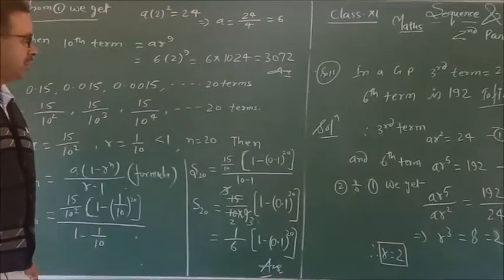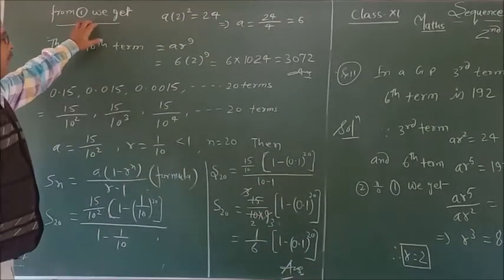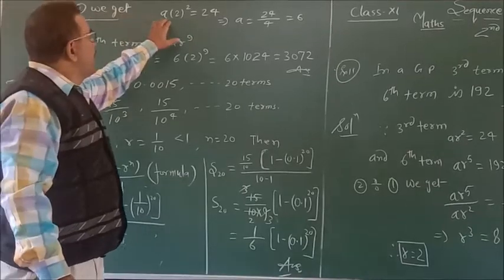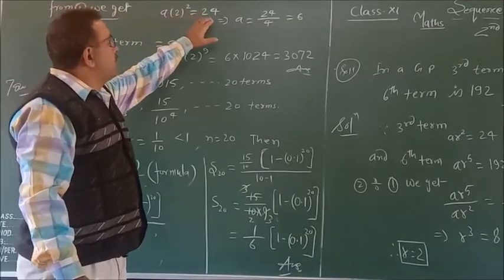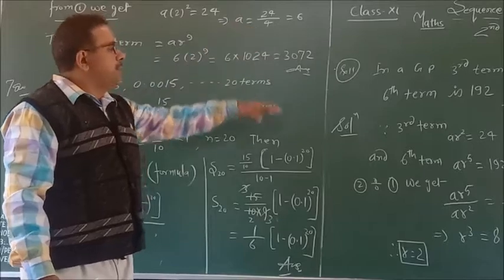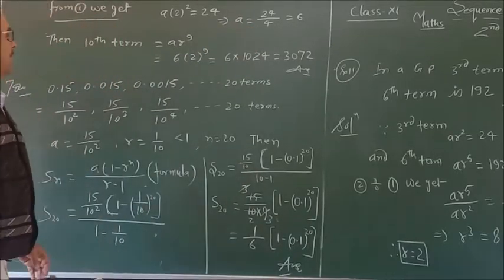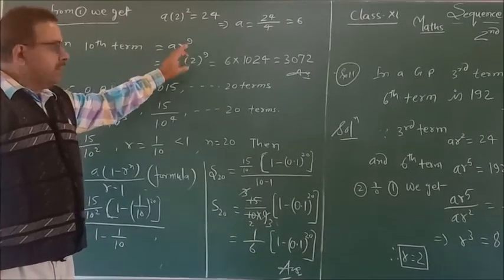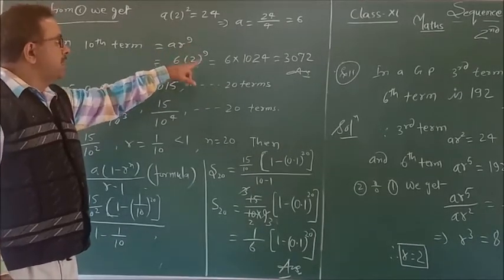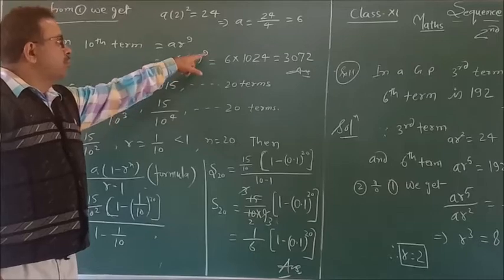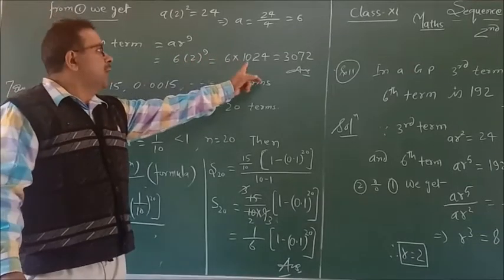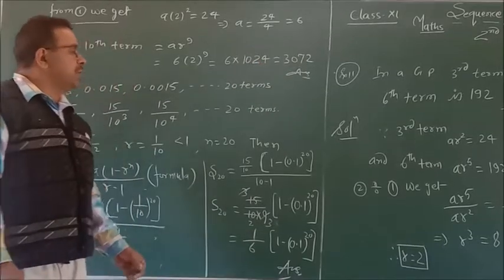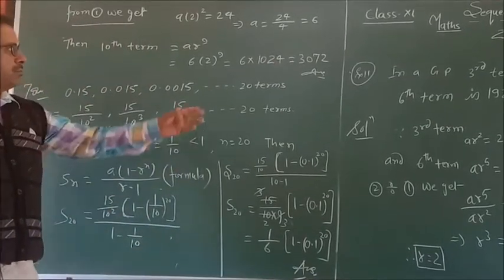The common ratio r = 2. Putting the value of r into the first equation ar² = 24, we get a × 4 = 24, so a = 6. Hence, the 10th term = ar⁹ = 6 × 2⁹ = 6 × 512 = 3072 is the final answer.